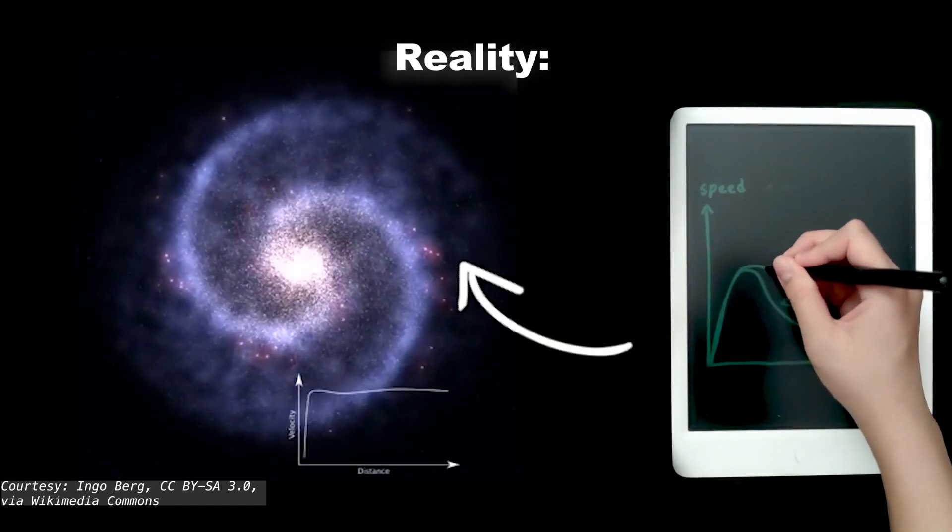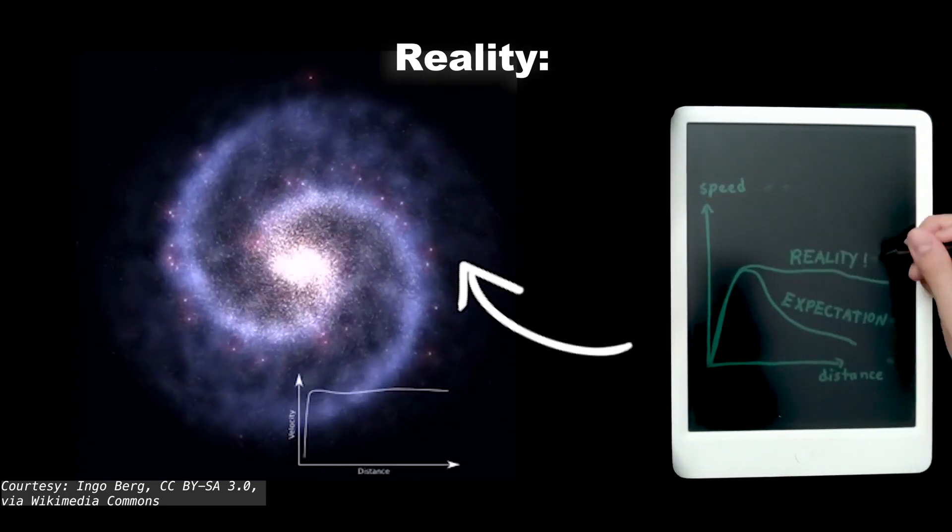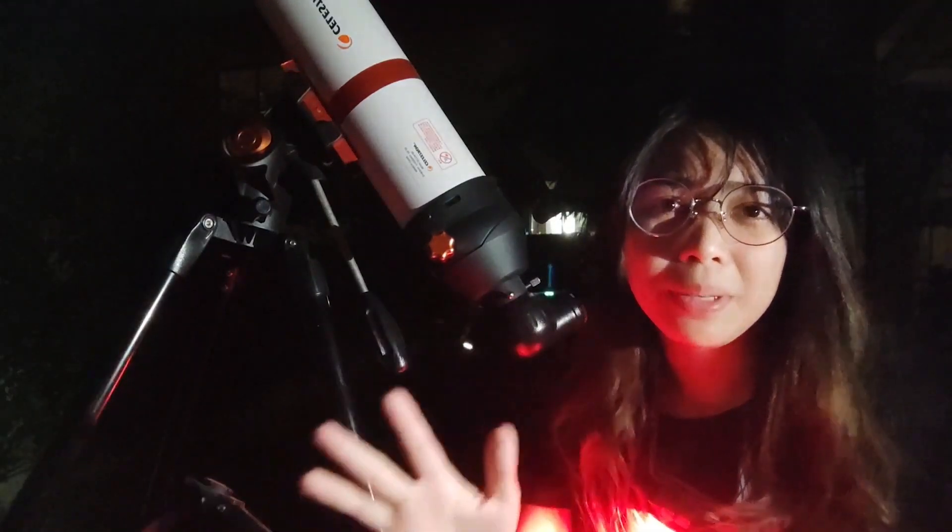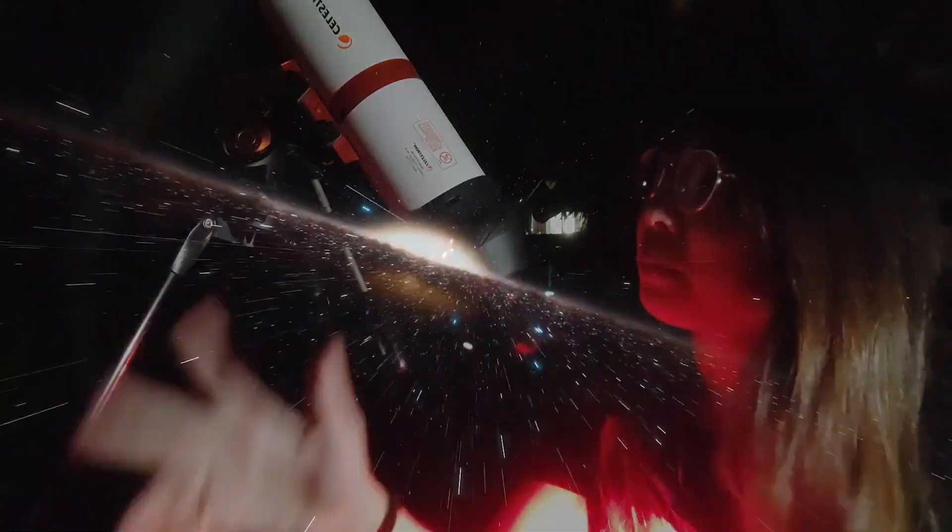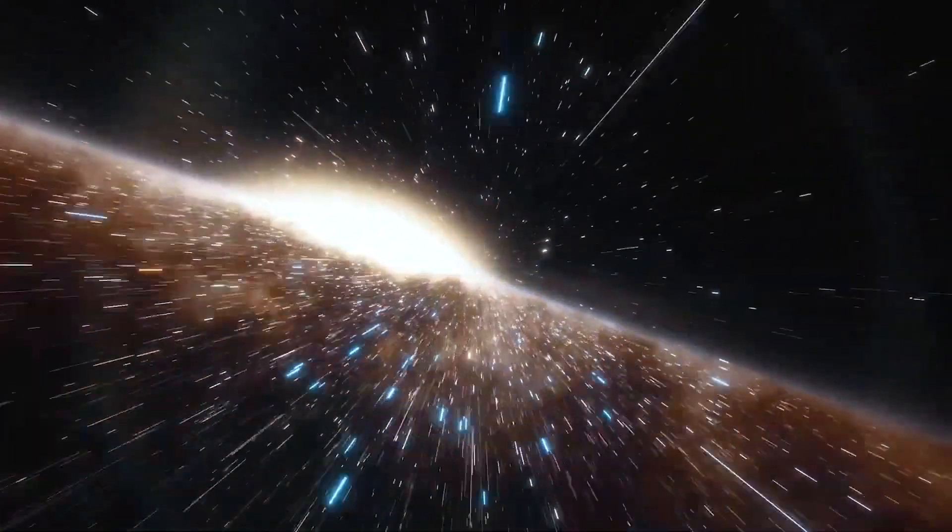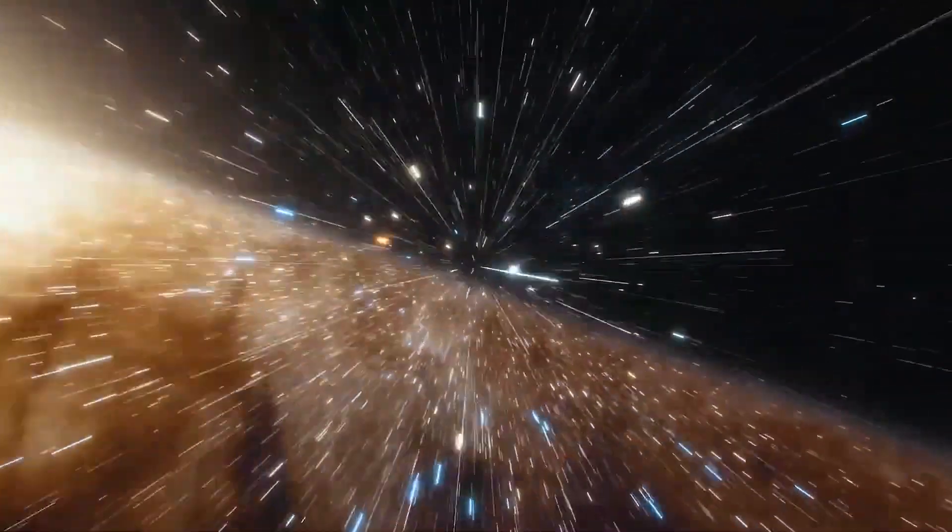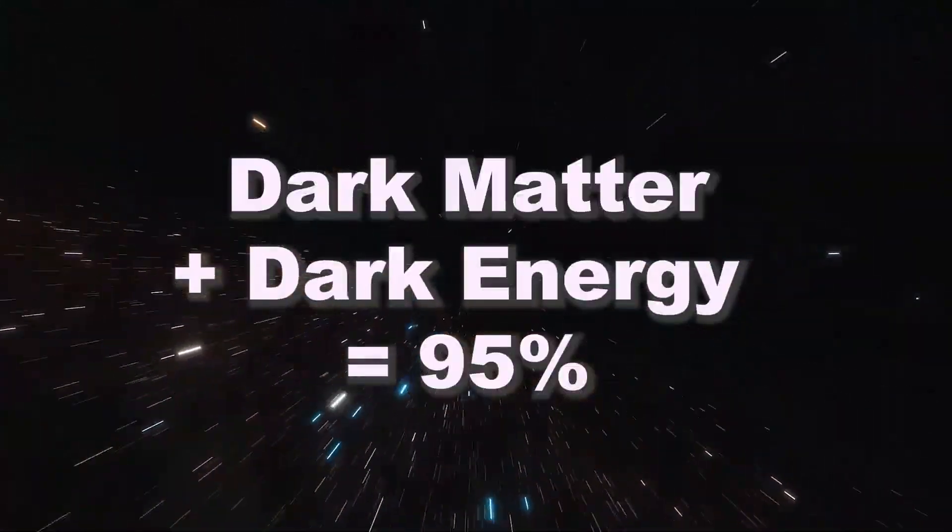But in reality, the outskirts of galaxies are moving way faster than predicted. So there must be some type of mysterious matter over there, dark matter. Also, there's something out there that's counteracting gravity that's causing the expansion of the universe to accelerate, hence dark energy. Both of which make up 95% of the universe. Real? We'll find out soon.